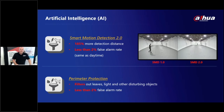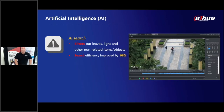Perimeter protection filters out annoying environmental triggers — leaves, cats, dogs, deer, and other small animals entering the camera's field of view will not trigger motion detection, keeping the false alarm rate below 2%. AI Search builds on this by filtering non-relevant detection points, improving search efficiency by up to 98%.